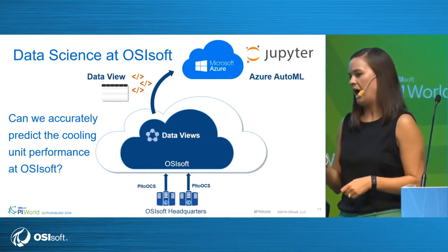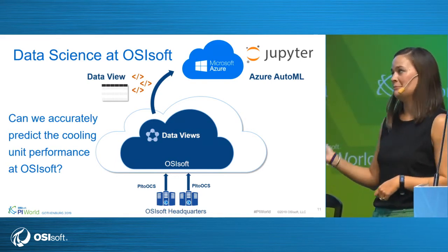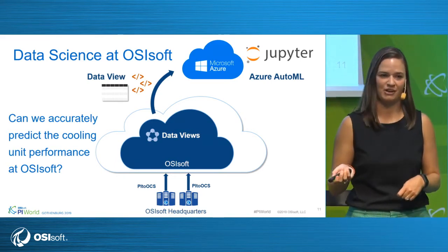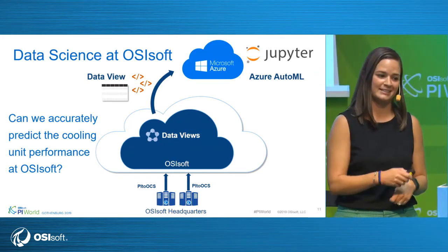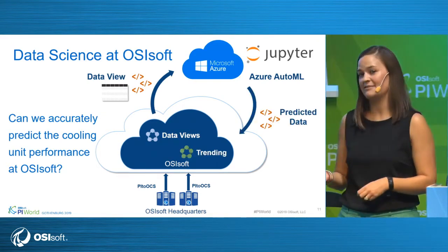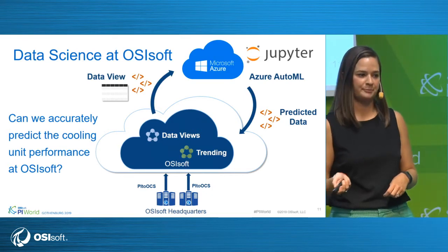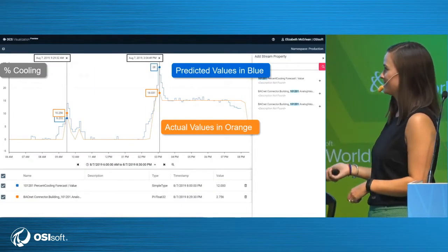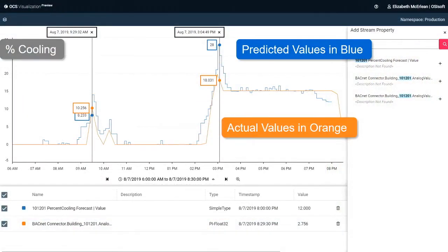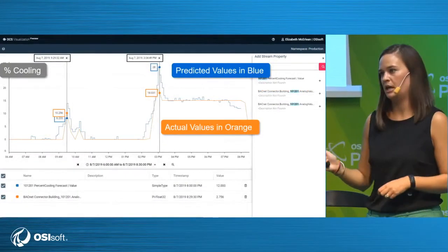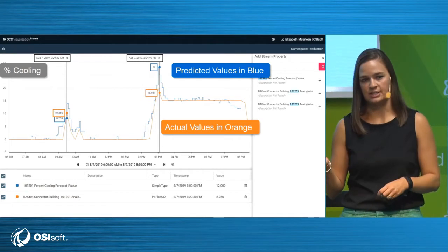After preparing the data view, I used Azure AutoML and an Azure Notebook powered by Jupyter — I'm not a data scientist, so this is an easy way for me to get a jump start without having to know all the ins and outs of data science. Finally, we generate predictions and write them back into OCS using the API, and I'll show you the results in the new trending experience. It turns out we can predict the cooling — you can see the blue trace is predicted values and orange is actual values, looking at a single day in August at a five-minute sampling frequency. Not too bad for a first pass.